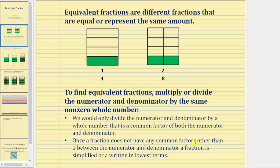If a fraction does not have any common factors other than one between the numerator and denominator, that fraction is called simplified or written in lowest terms. Looking at our model again, one-fourth is a simplified fraction because the only common factor between one and four is one.